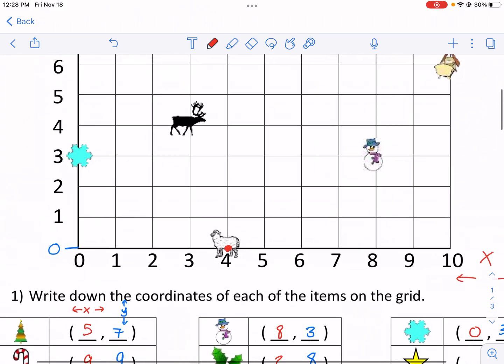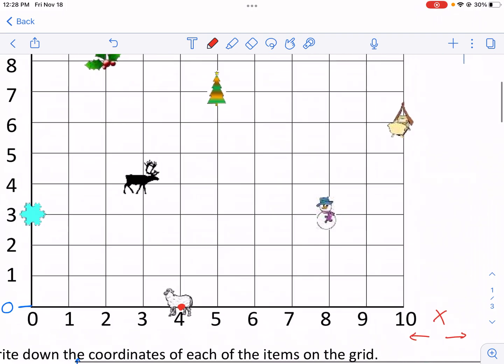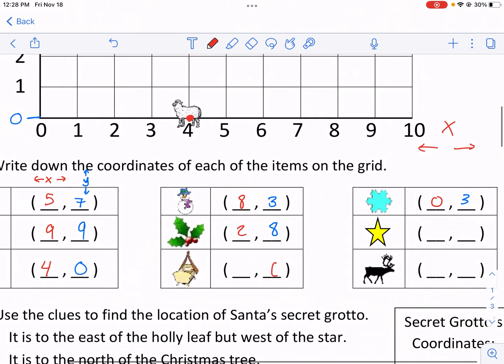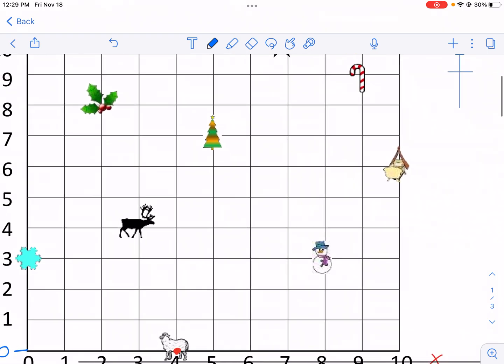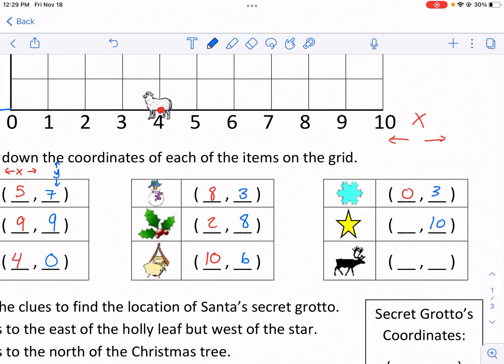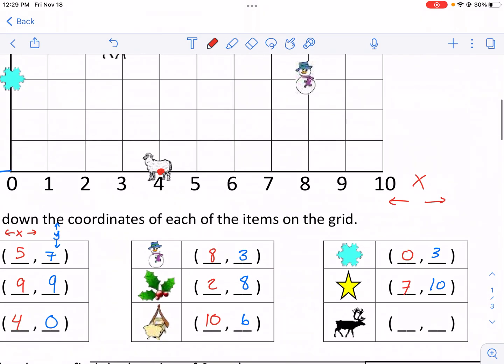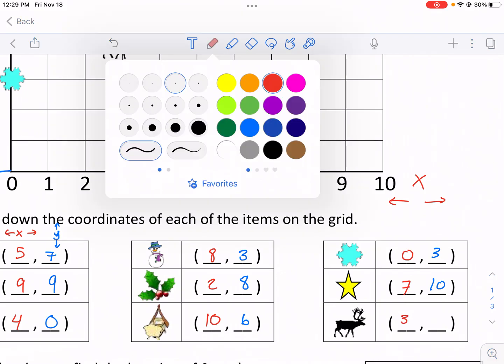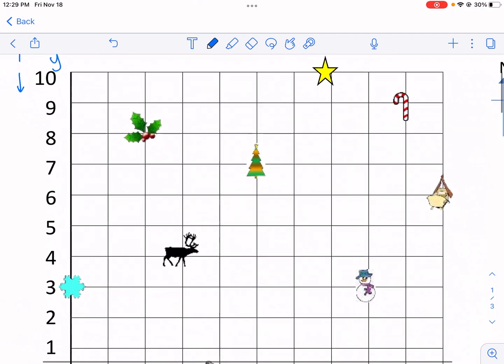We have a manger next. Let's go ahead and find the manger. We have 10, 6. I'm just trying to do my y-coordinates in blue, staying consistent. We have a star here, so the star is at 7, 10. And then last but not least, the reindeer, which is 3, 4.